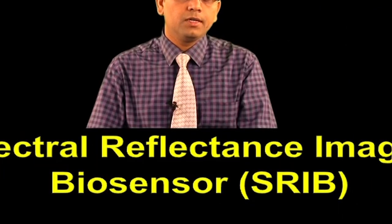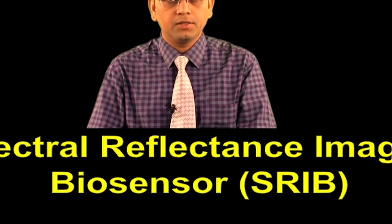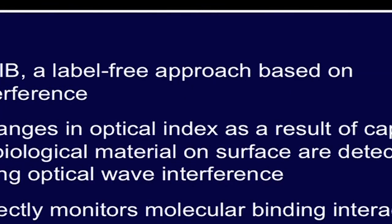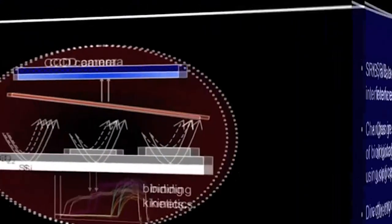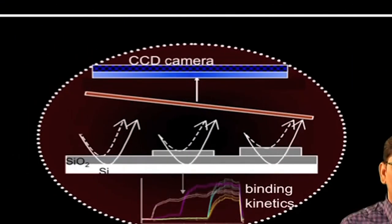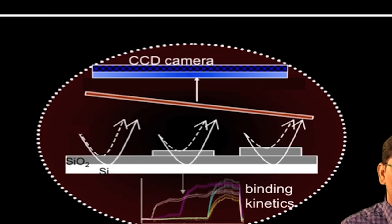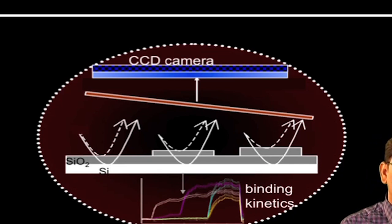Let us now discuss about spectral reflectance imaging biosensor, or SRIB. It is a label-free approach which is also based on interference. The changes in optical index as a result of capture of biological material on the surface can be detected by using optical wave interference. SRIB monitors molecular binding interactions directly. The interference of light reflected from the silicon dioxide surface increases the optical path length difference caused by biomolecular binding, which in turn is measured by the spectral reflectance imaging biosensor.